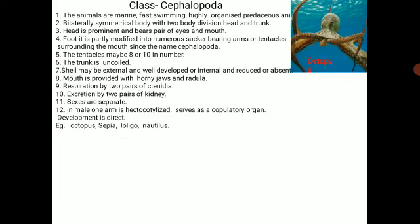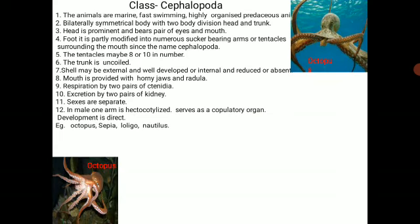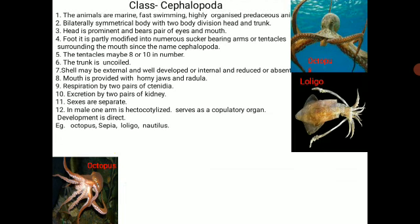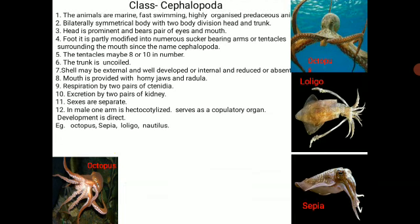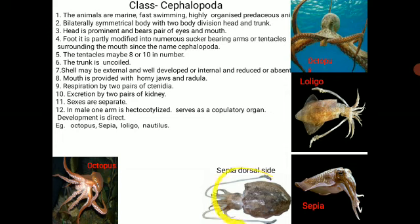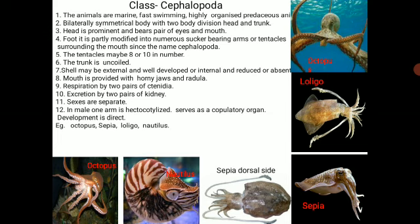Examples of class Cephalopoda are Octopus, Sepia, Loligo, and Nautilus. Observing the examples: both shown are Octopus; this is Loligo; this is Sepia shown from the front and dorsal views; and this is Nautilus. All these animals belong to class Cephalopoda.